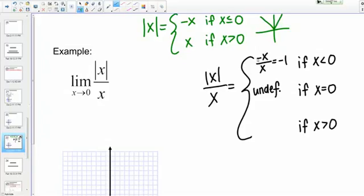Let's look at the case where X is greater than 0. Once again, I know from what I wrote in green that the absolute value of X equals X in this case, and then of course I still have my X in the denominator. Once again, I can reduce this to 1 since I'm not considering the case where X equals 0, which we've just considered as a separate case, undefined.